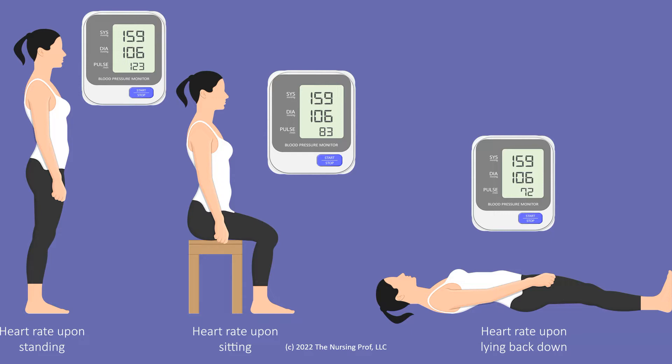When she's laying flat, her heart rate is 72. When she moves to the sitting position, her heart rate moves up to 83, and then in the standing position at 123. You may take your heart rate right now and say my resting heart rate while I'm standing isn't 123. The point is to show that there are differences that occur within the body to accommodate changes in position. This is what we call compensation.